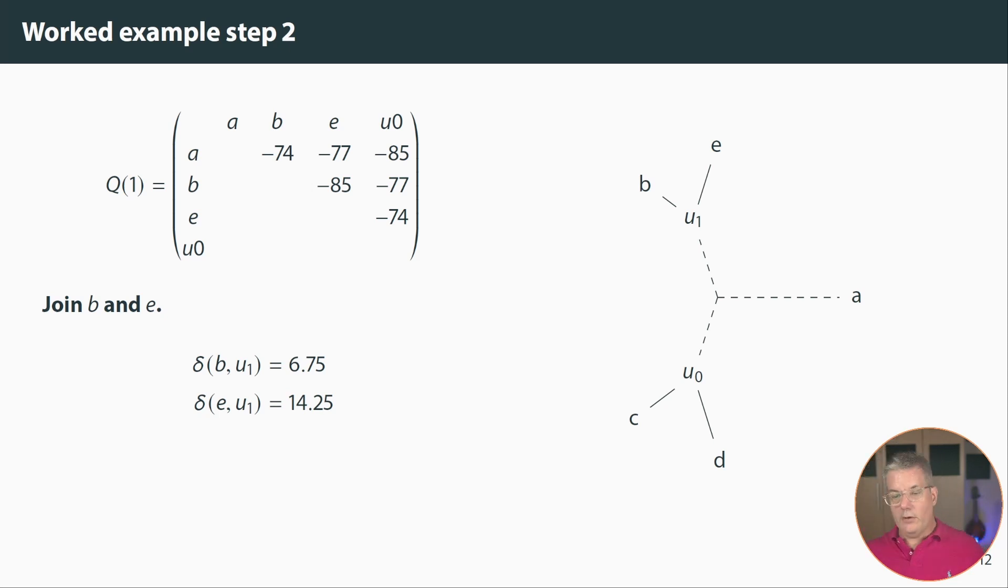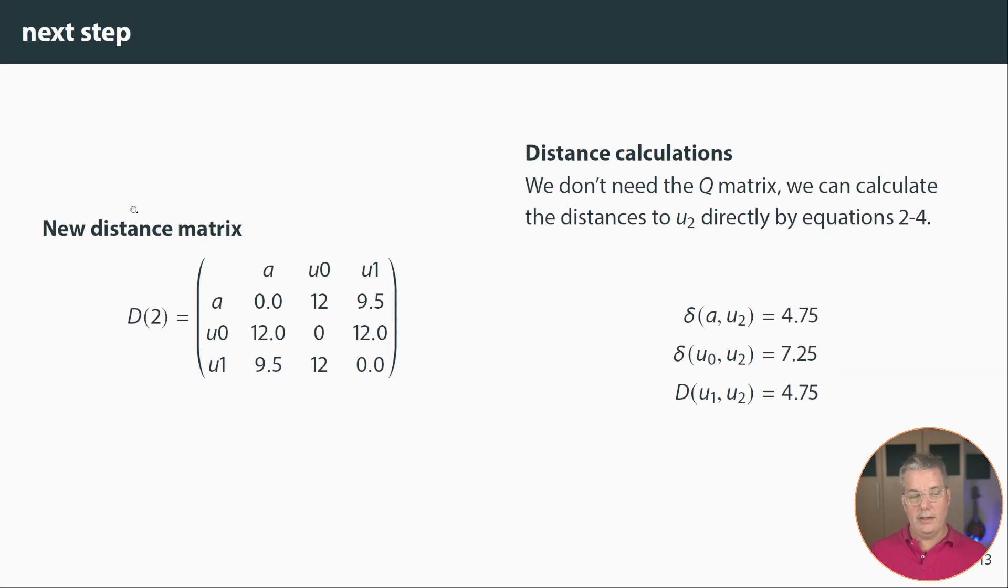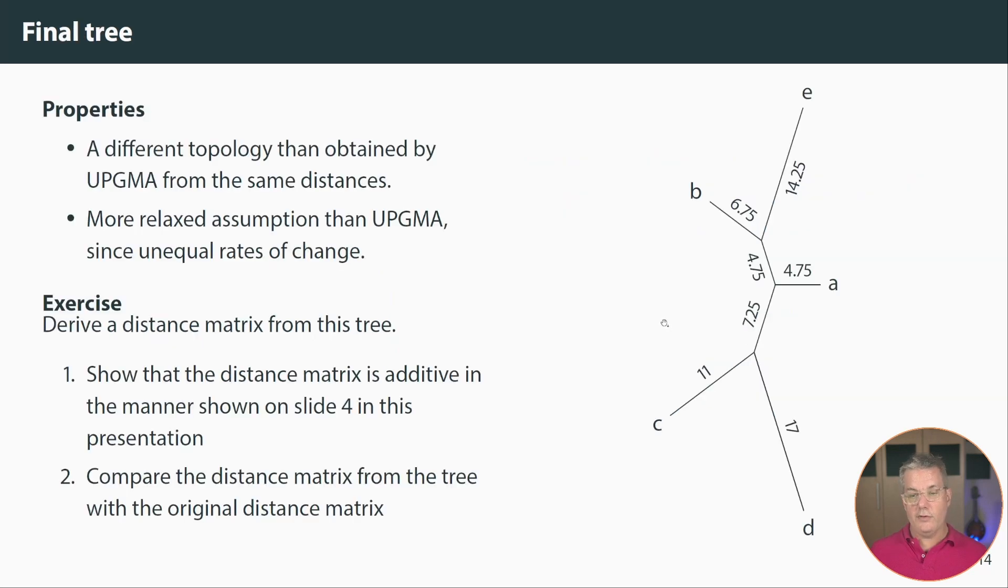Now if you look at this you can already tell that we actually don't need any more nodes. And at this point we've got all the nodes but we don't know the branch lengths here. Nonetheless, from this we can calculate a new distance matrix which we have here and then immediately calculate the branch lengths from the equations on the previous slides. And so now we have this A U2 distance U0 U2 distance and U1 U2 distance. And we simply plug those in and we get ourselves a tree. So now what I've done is I've removed the labels on U0 U1 and U2 and I've added in the branch lengths so that can be seen. And we now have this tree.